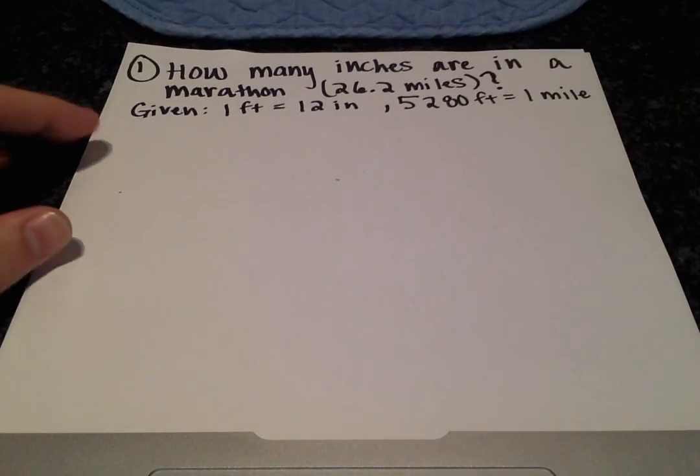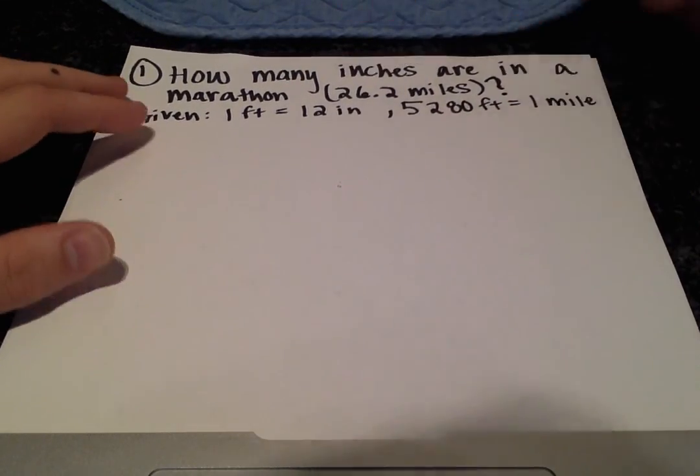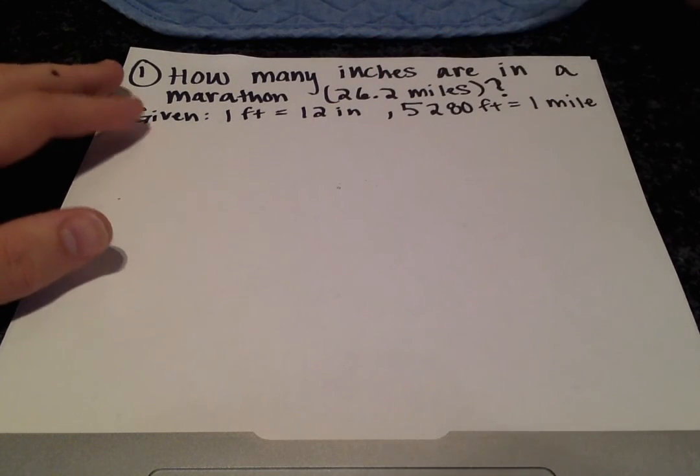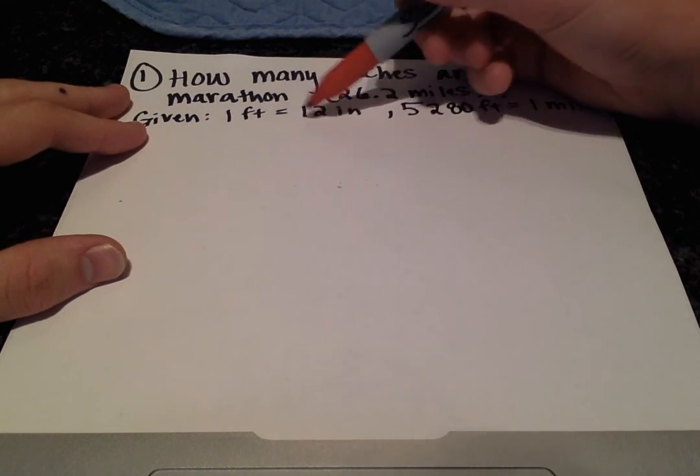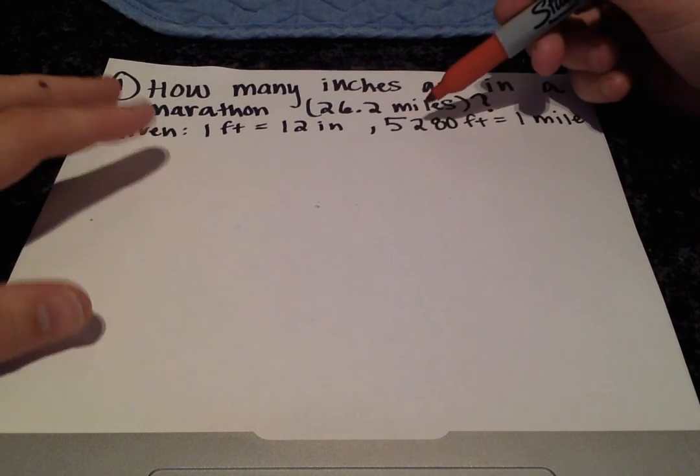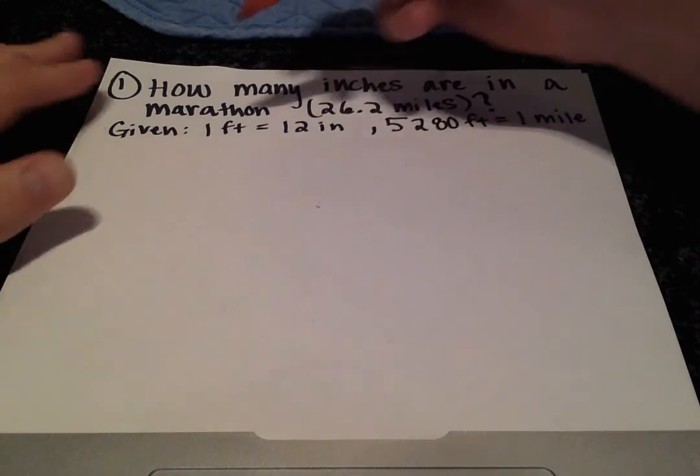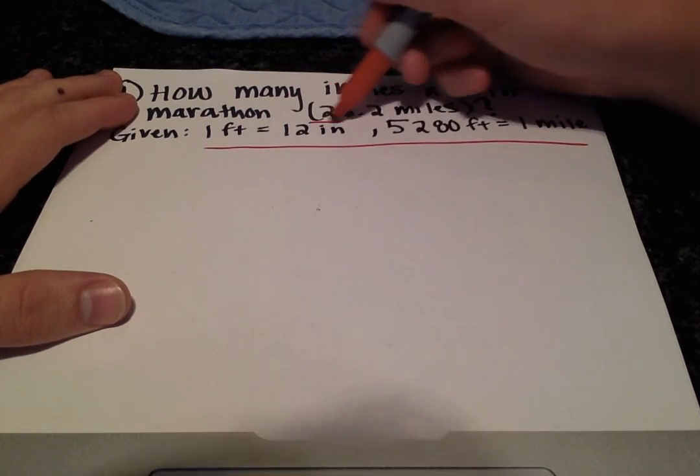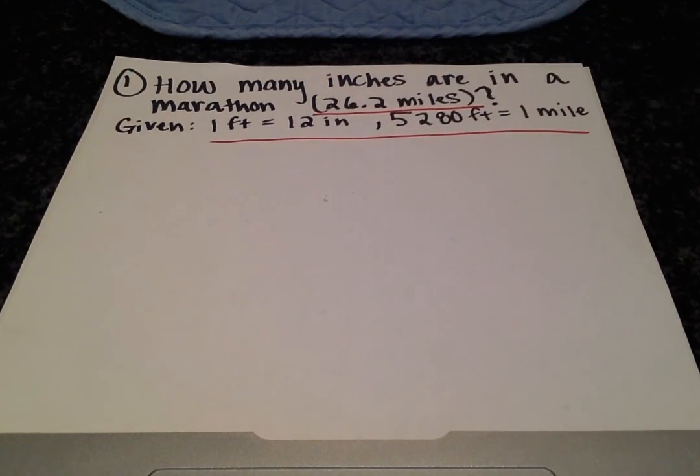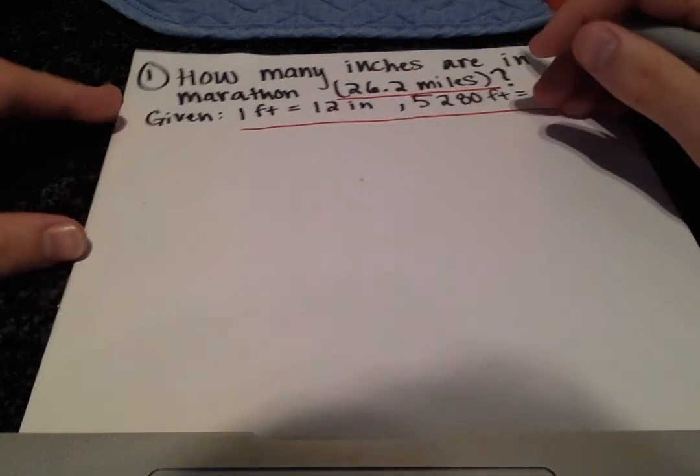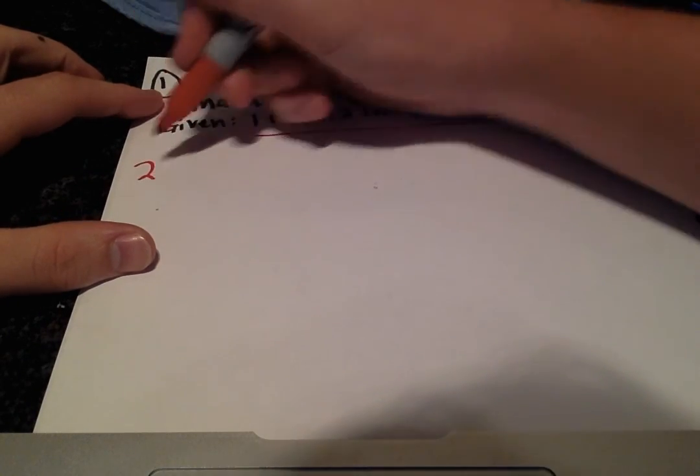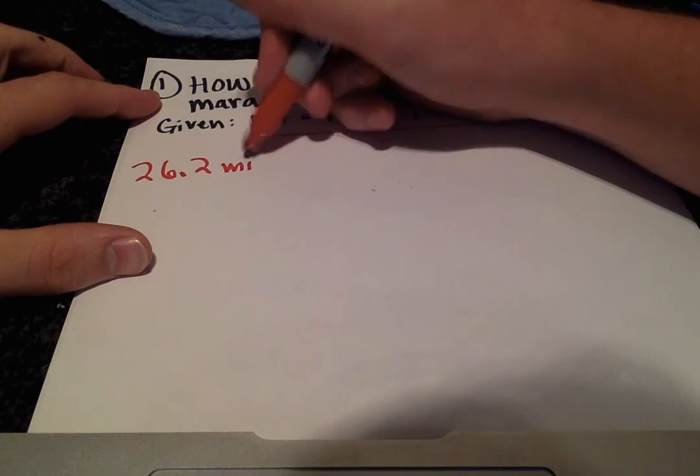These ones will be pretty straightforward and not too difficult. So how many inches are in a marathon? A marathon is 26.2 miles and they give you 1 foot equals 12 inches and 5,280 feet equals 1 mile. So they already did this step for us. They gave us the units that we need and the units we'll be working with. But oftentimes you'll have to look in the back of a textbook to find all these values. So the first step is to write out what they give us, 26.2 miles.